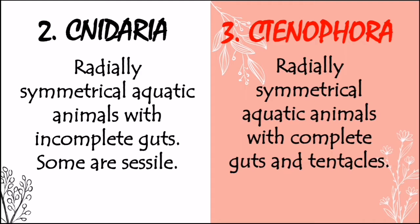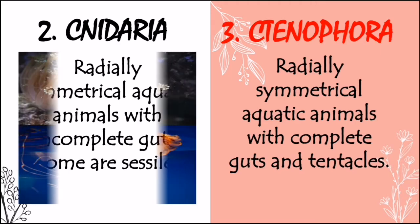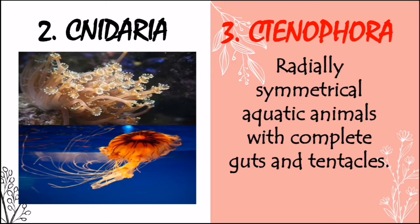Ctenophora has a complete gut, meaning it has a digestive tract, which is a group of tissues or organs designed to break down food. It can also be referred to as having a clear beginning or mouth, and a separate end or anus. Cnidarians do not have this, as they have a single point of opening and ending. Cnidarian animals take in food from the same opening they release waste, just like jellyfish.